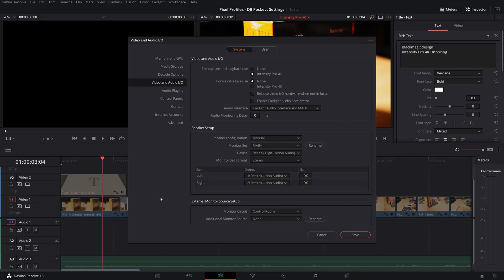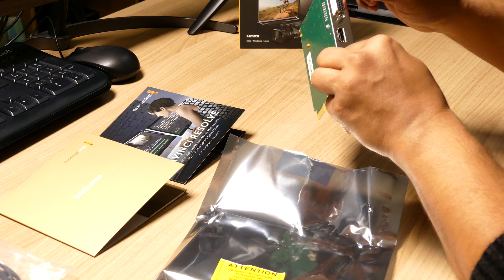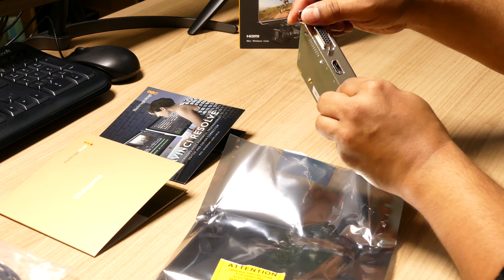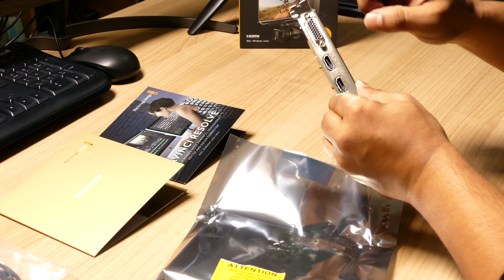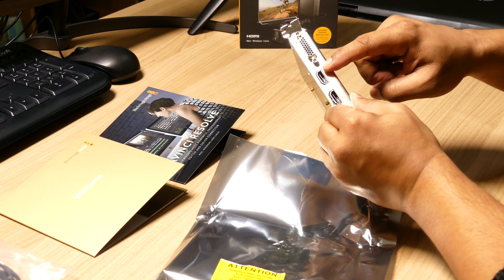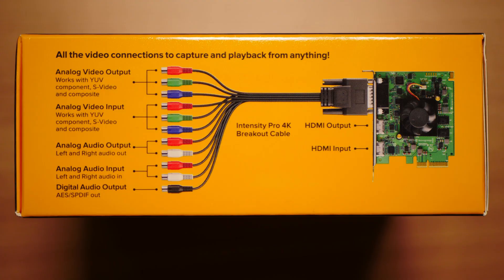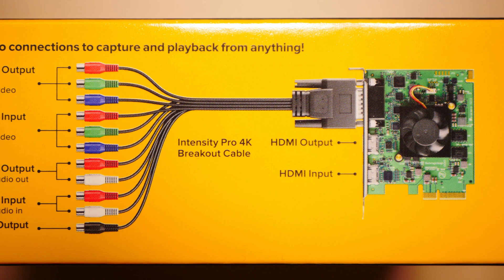For capture and playback, on the back of the Intensity Pro 4K card it is quite confusing which HDMI port is input and which one is output, as there is no label for that. However, on the packaging box of the card there is a clear diagram indicating which port is used for which purpose.